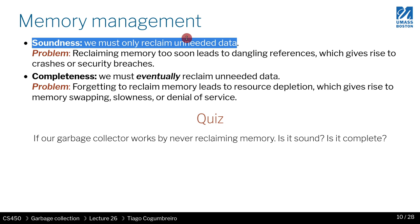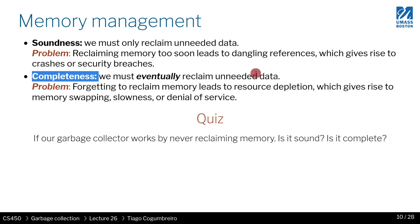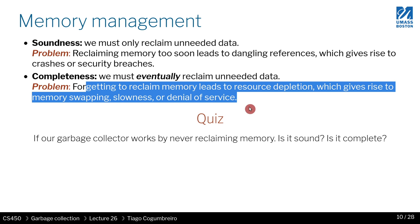On the other side of the story, you have completeness: every piece of data that is unnecessary must be eventually reclaimed — you don't want memory leaks. The problem of soundness is when you have code touching memory that was rewritten by something else; you might even have data recovered by the OS and have your whole program crash. The problem of completeness is wasting resources — if your program keeps allocating data and never reclaiming it, it might consume the whole memory of your OS and eventually crash or make the system unusable.